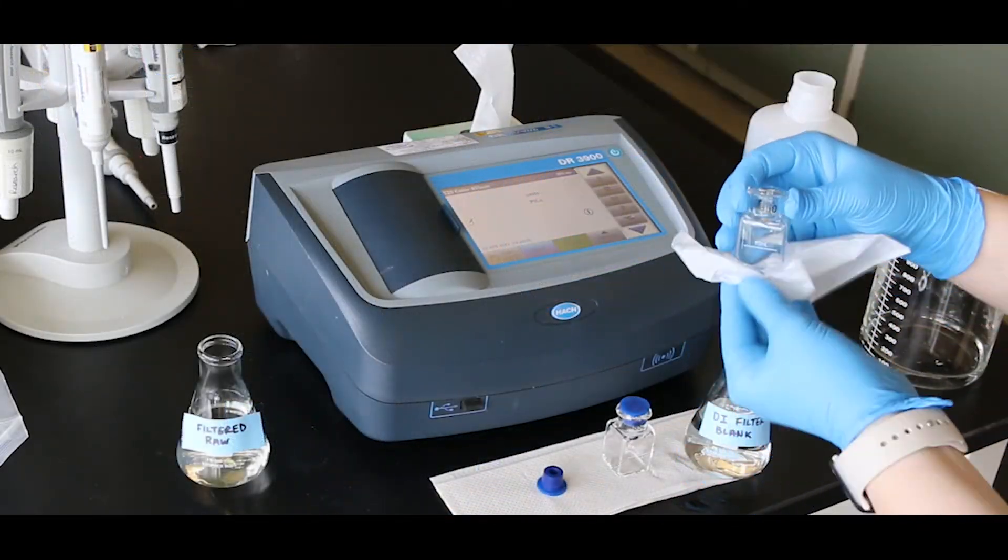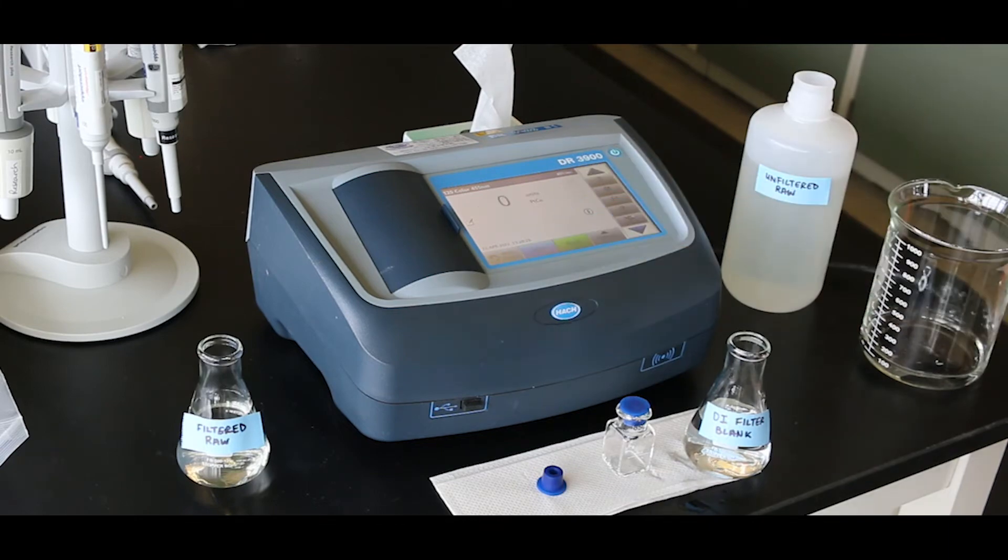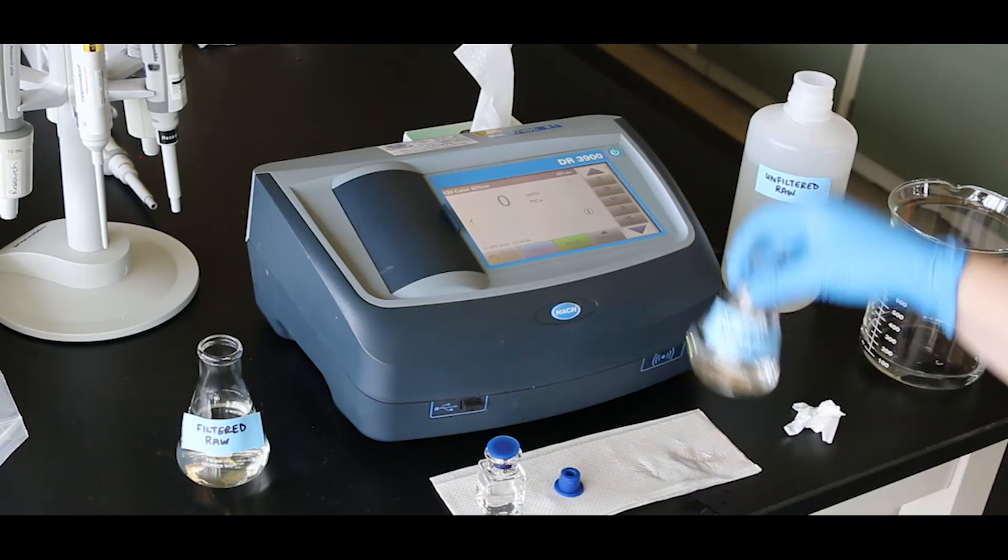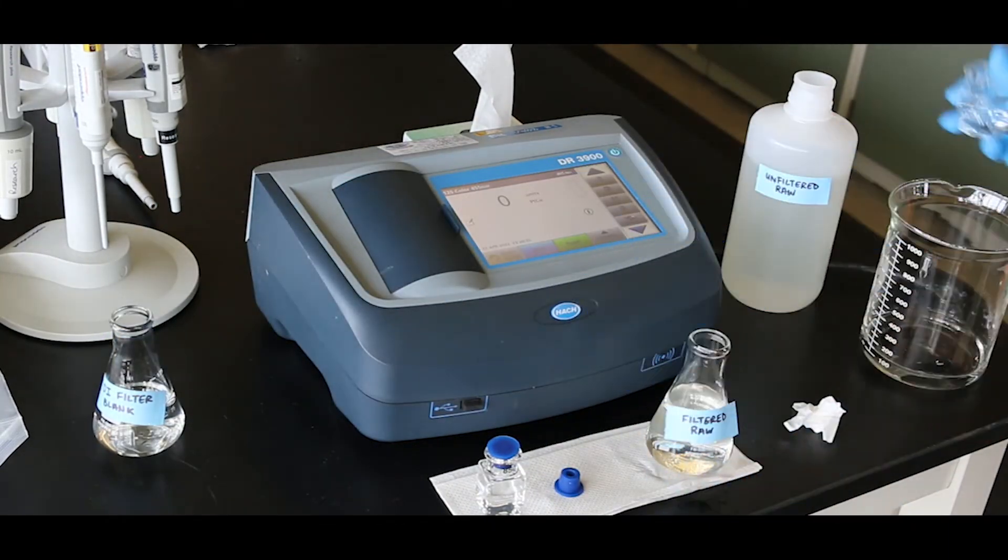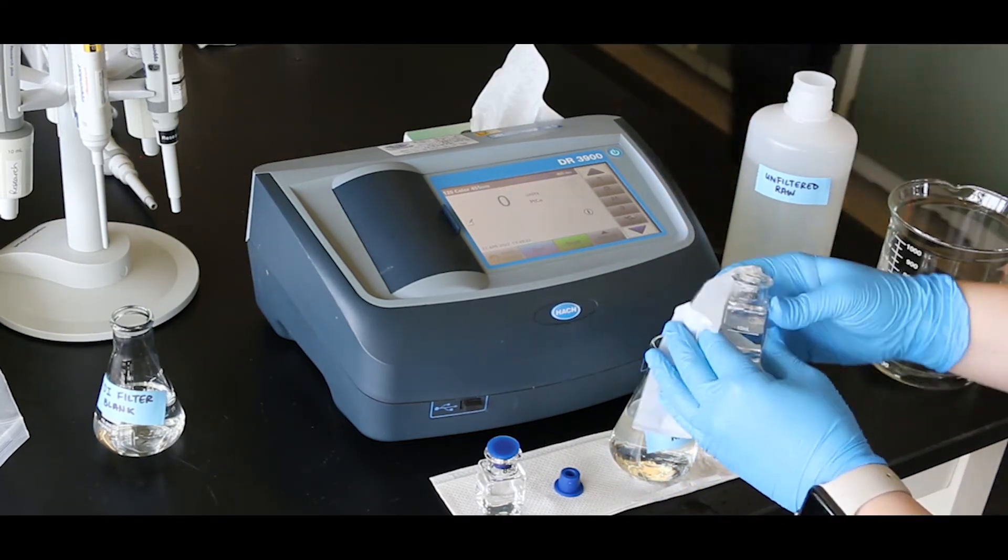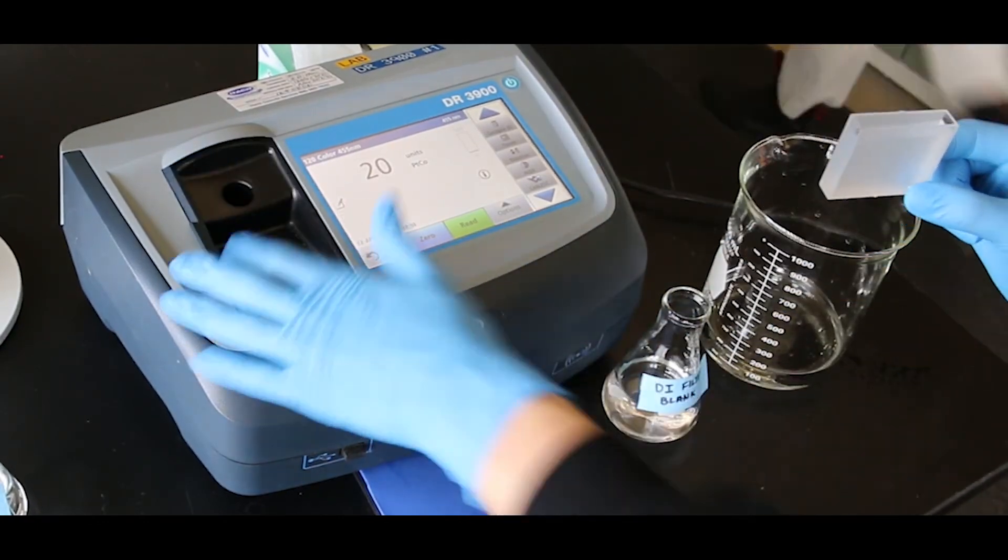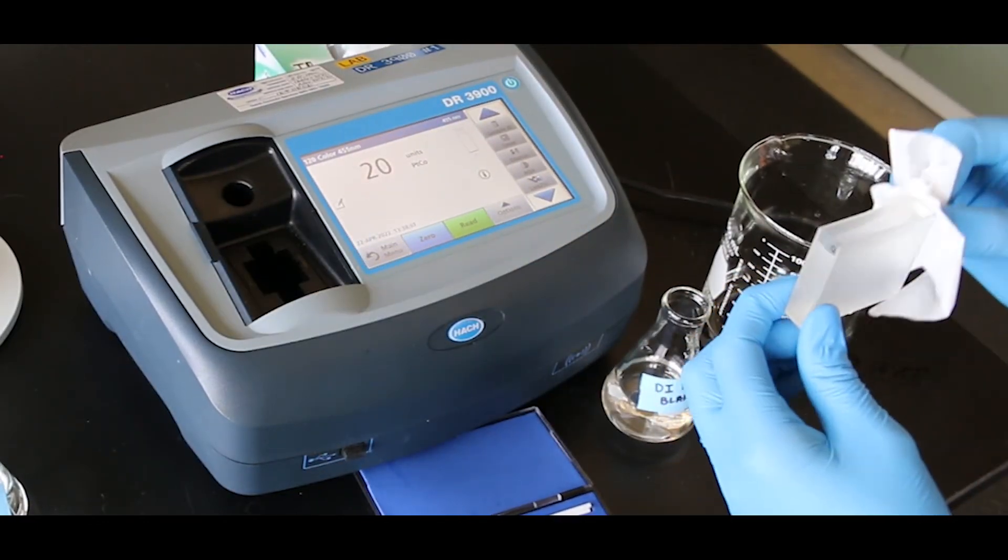For low-range color, under 15 platinum-cobalt units, use the same cell to zero the blank and read the prepared sample. Make sure the cell is rinsed well and conditioned with the sample. For very low levels, a rectangular cell with a longer path length can also be used. See method for details.